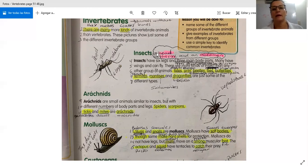Insects. Insects have six legs and three main body parts. Many have wings and can fly. There are more kinds of insects than any other group of animals. Bees, ants, beetles, flies, butterflies, termites, mantises, and dragonflies are just some of the different types.